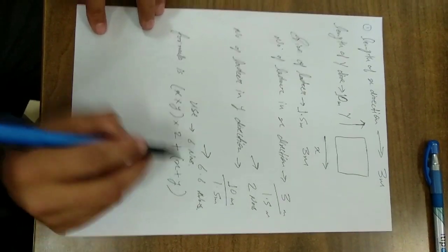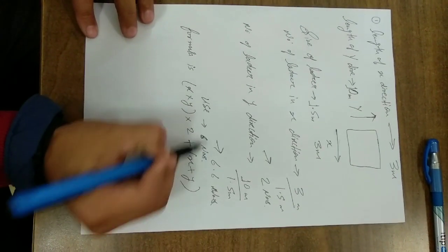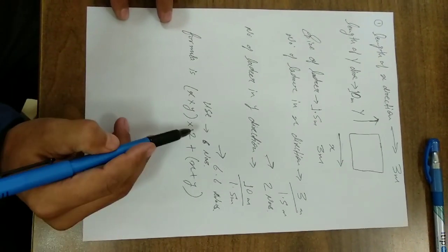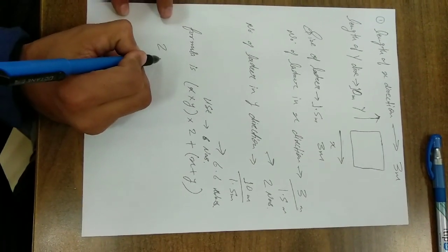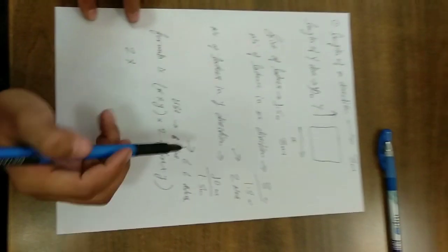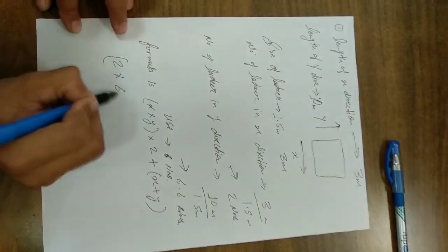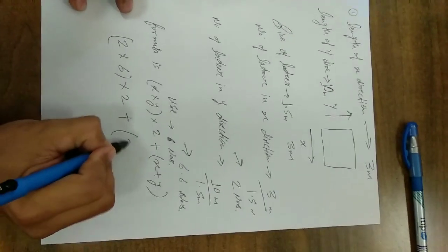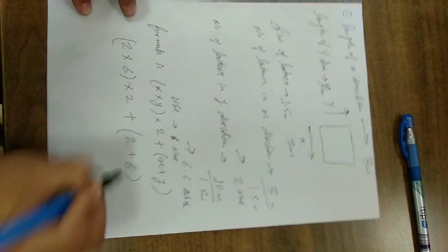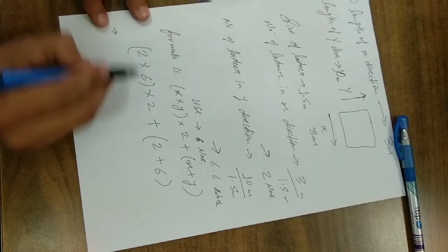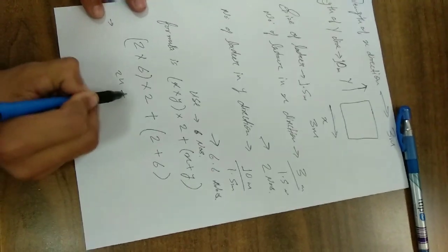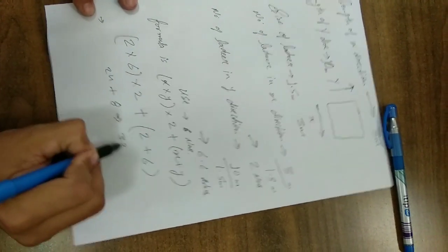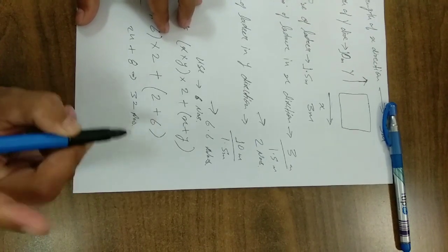Now put these values, 6 number and 2 number in this formula. The number of lasers in X direction is 2 numbers into number of lasers in Y direction is 6 numbers, into 2, plus X direction 2, Y direction 6. Here 6 into 12, 12 into 24, plus 6 is 30, plus 2 is equal to 8. Then 8 into 24 number of lasers is 32 numbers in one layer.